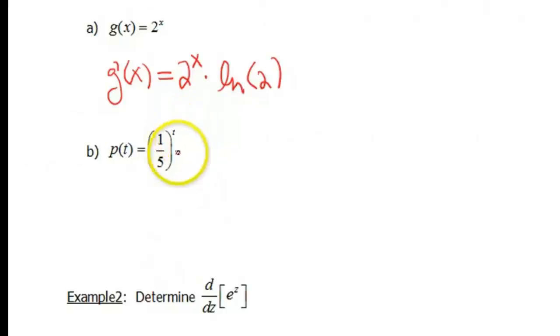It's of the form a to the x, or in this case, a to the t, where a is 1/5. 1/5 is definitely a positive real number, so we can follow the same formula. So that's gonna be 1/5 to the t. Again, that comes back at you. And then times the natural log of 1/5.